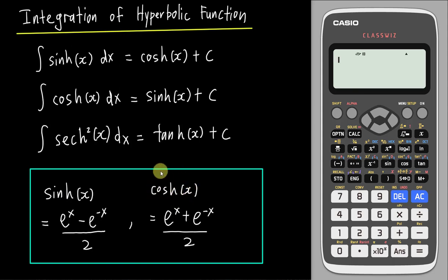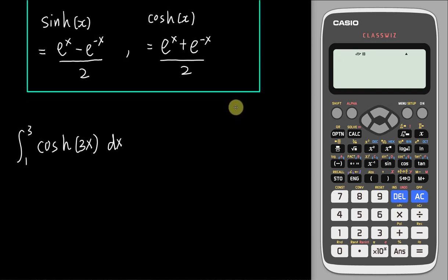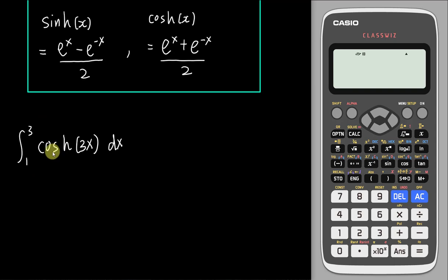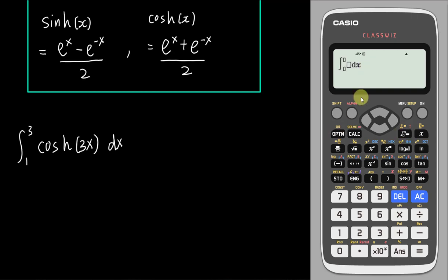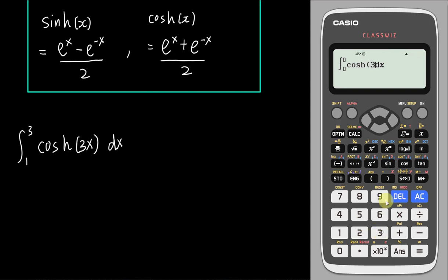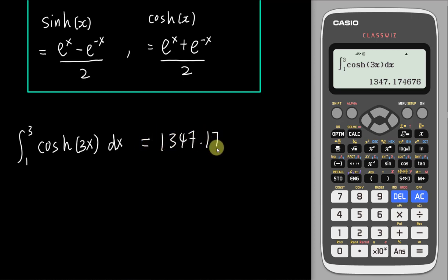I will choose one example to demo using this calculator. If you want to integrate hyperbolic cos(3x) from 1 to 3, you can straight away use the calculator to get the answer. You just go to the integration sign, choose the hyperbolic cosine — go to options, look for hyperbolic function which is number 1, then hyperbolic cosine which is number 2. Enter 3x, close the bracket, set the limits from 1 to 3, and the calculator will give you the answer: 1347.17.